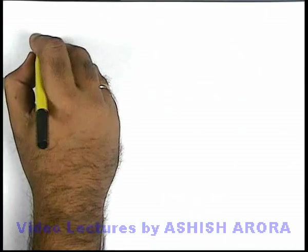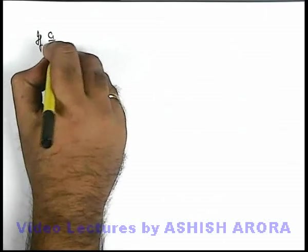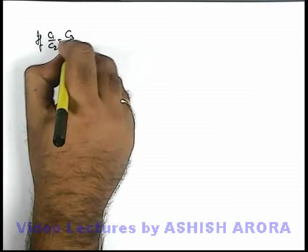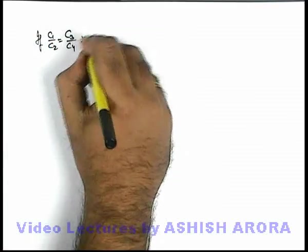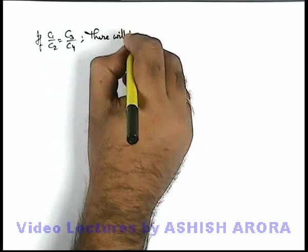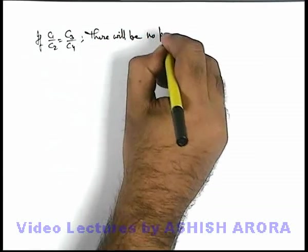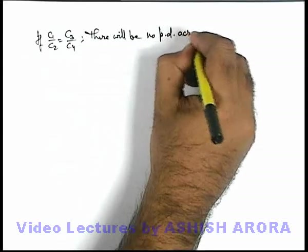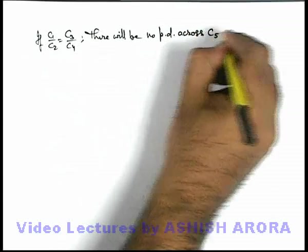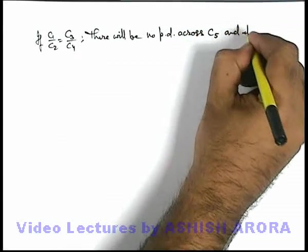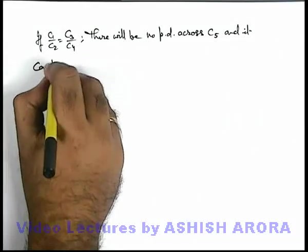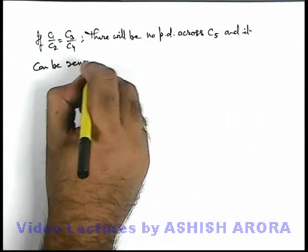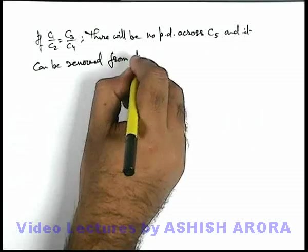So here we can write if C1 by C2 is equal to C3 by C4, there will be no potential difference across C5 and it can be removed from circuit.